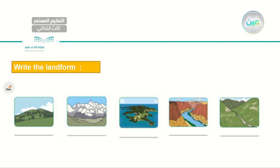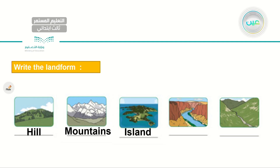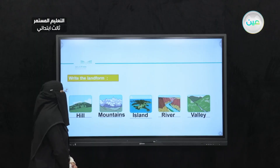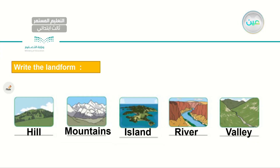Let's start with the first picture. I have a hill. Let's move to the next one — we have mountains. How about the one in the middle? I have an island. Notice the S here is silent — we don't pronounce it. Next, I have a river. And for the last landform, I have a valley. Let's read the landforms one last time: hill, mountains, island, river, and valley.